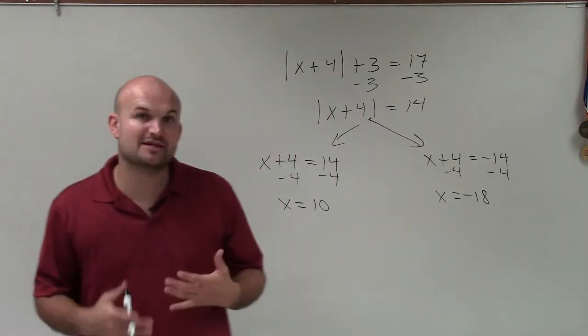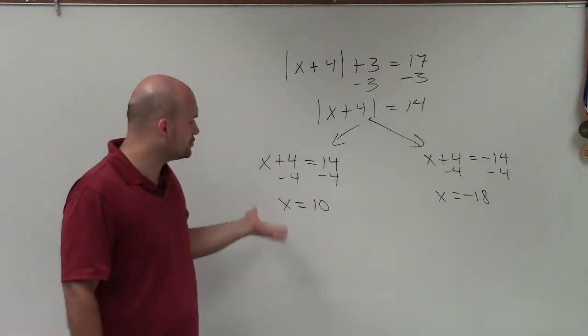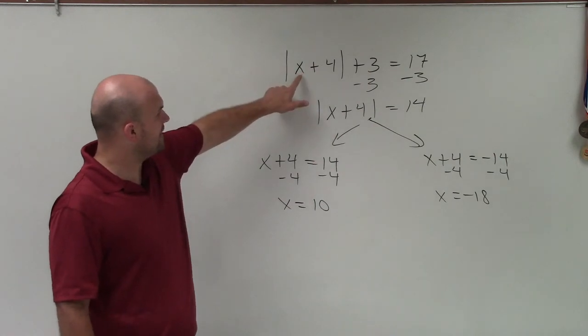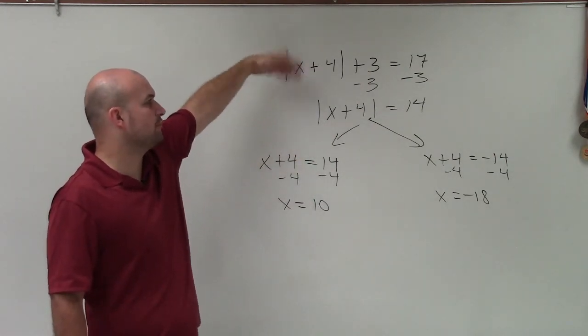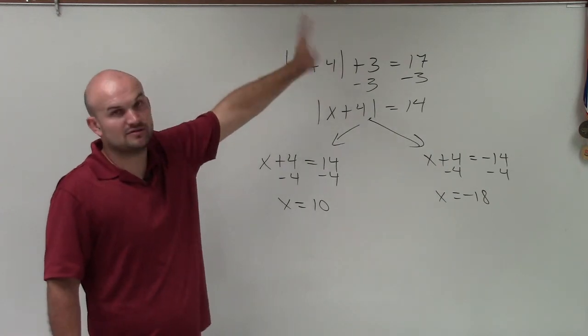A lot of times with absolute value, we want to make sure both these solutions are true. So I'll plug 10 in for x. 10 plus 4 is 14. Absolute value of 14 is positive 14. Plus 3 is 17. 17 equals 17. Good.